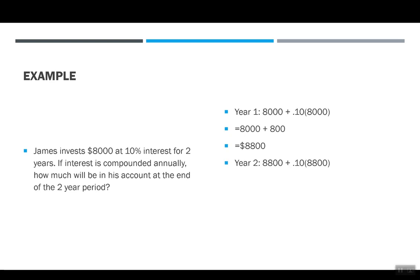In year two, we have the $8,800 that we started with plus 10% of that amount. So now we have $8,800 plus $880, which is a total of $9,680. This means James earned the difference between $9,680 and the $8,000 he invested, which is $1,680.